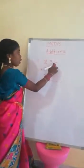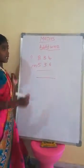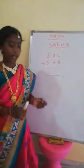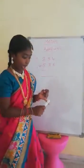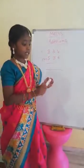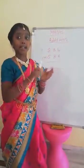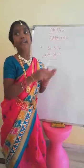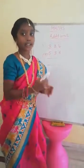4 plus 6: starting from 4, count after — 5, 6, 7, 8, 9, 10.